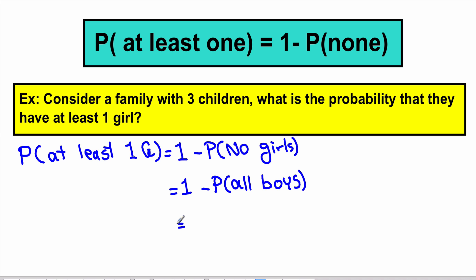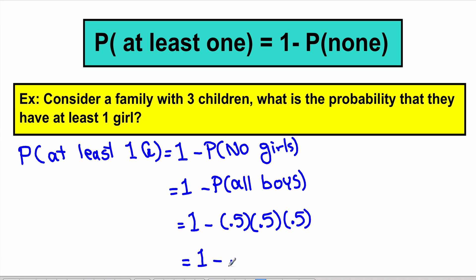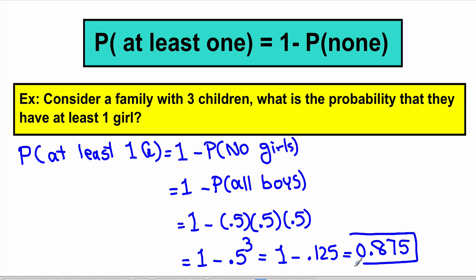The kids being a boy or girl are independent events, so the probability of all boys is: 0.5 for the first child, times 0.5 for the second child, times 0.5 for the third child. Using the multiplication rule for independent events and simplifying, we get 0.875. So the probability of having at least one girl in a family with three children is 0.875.